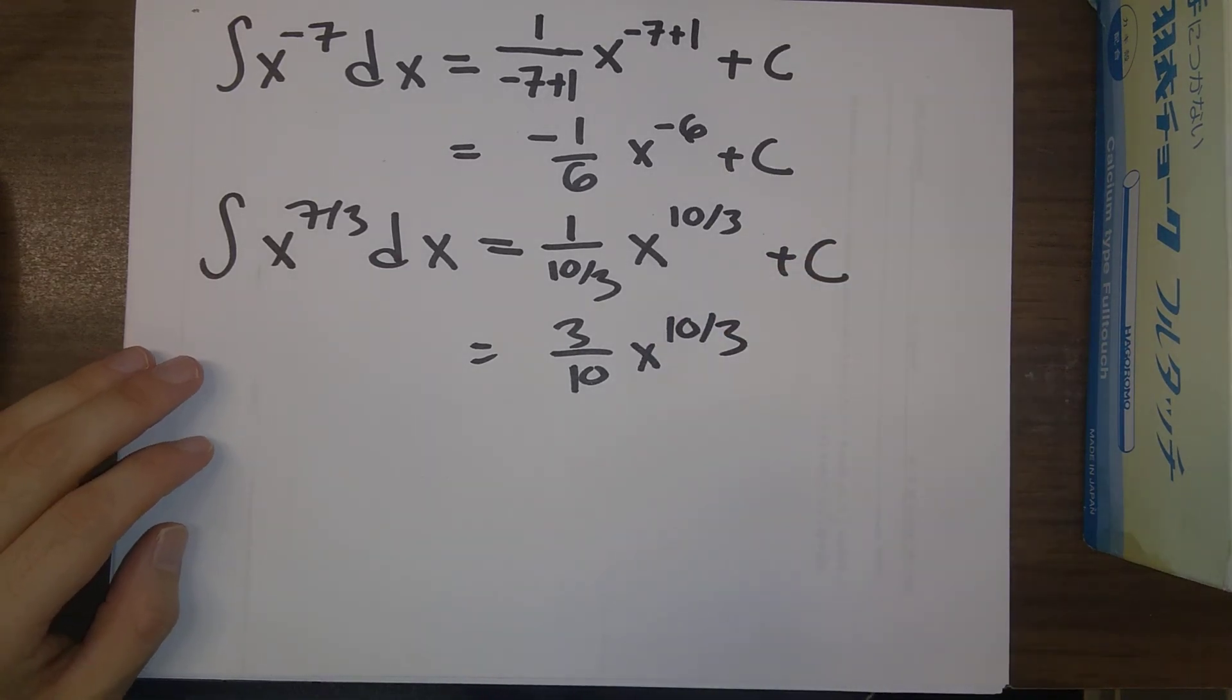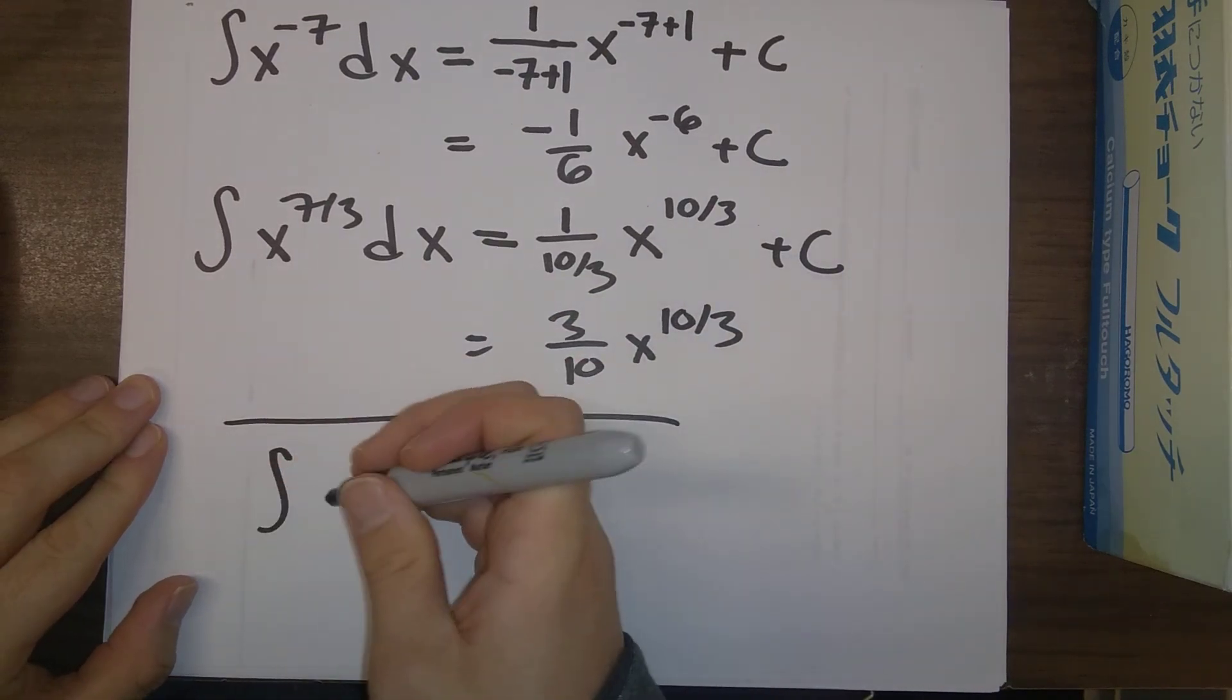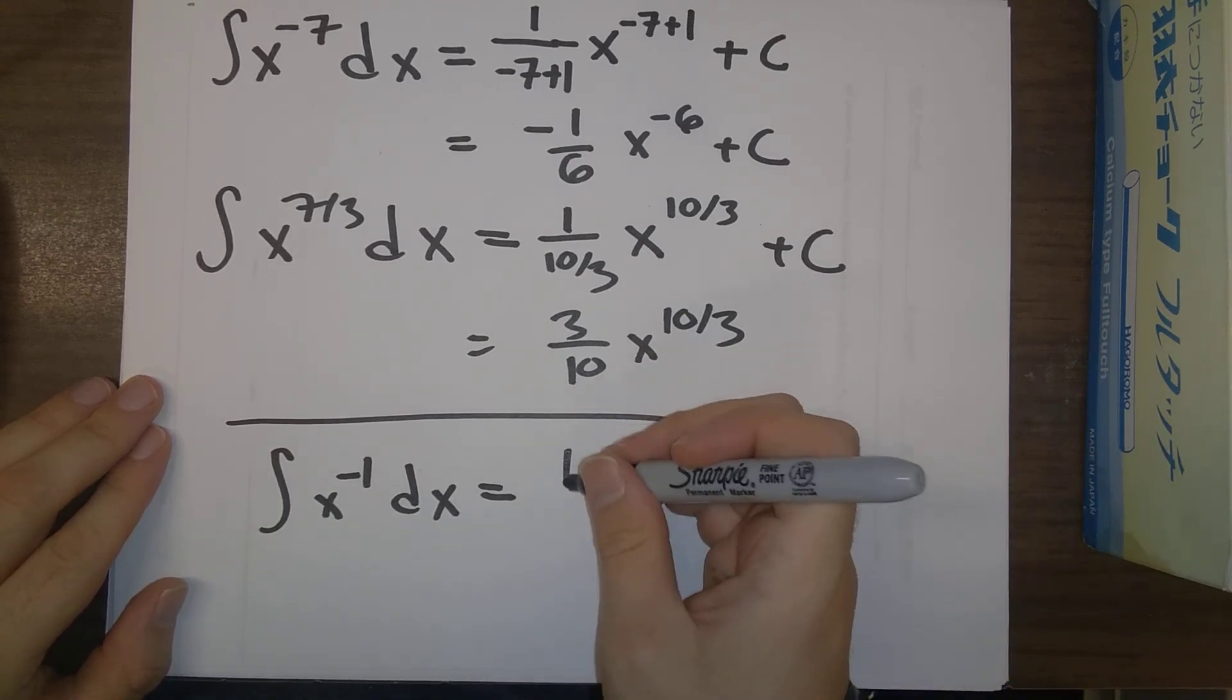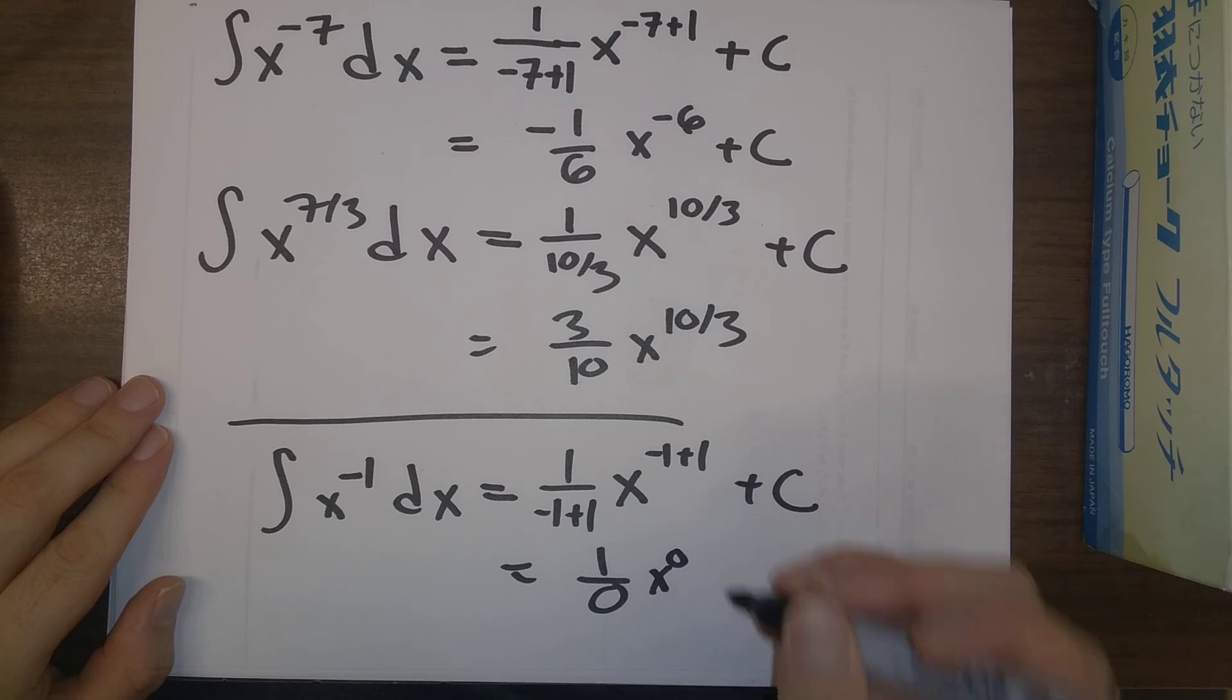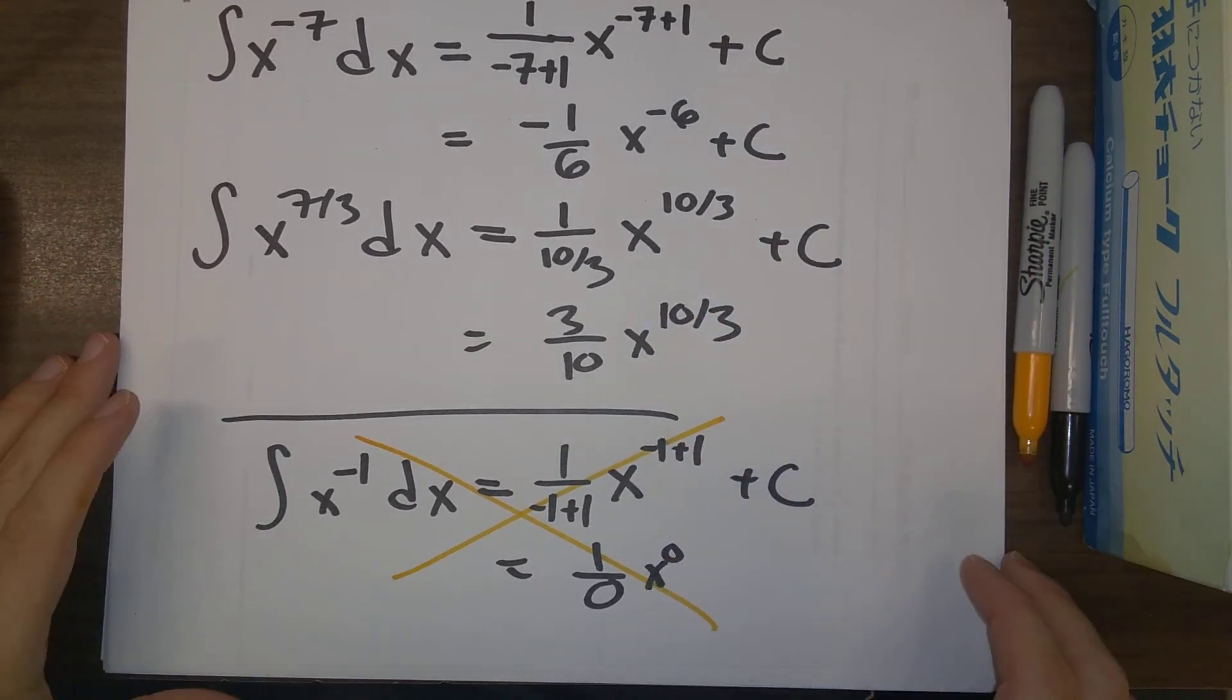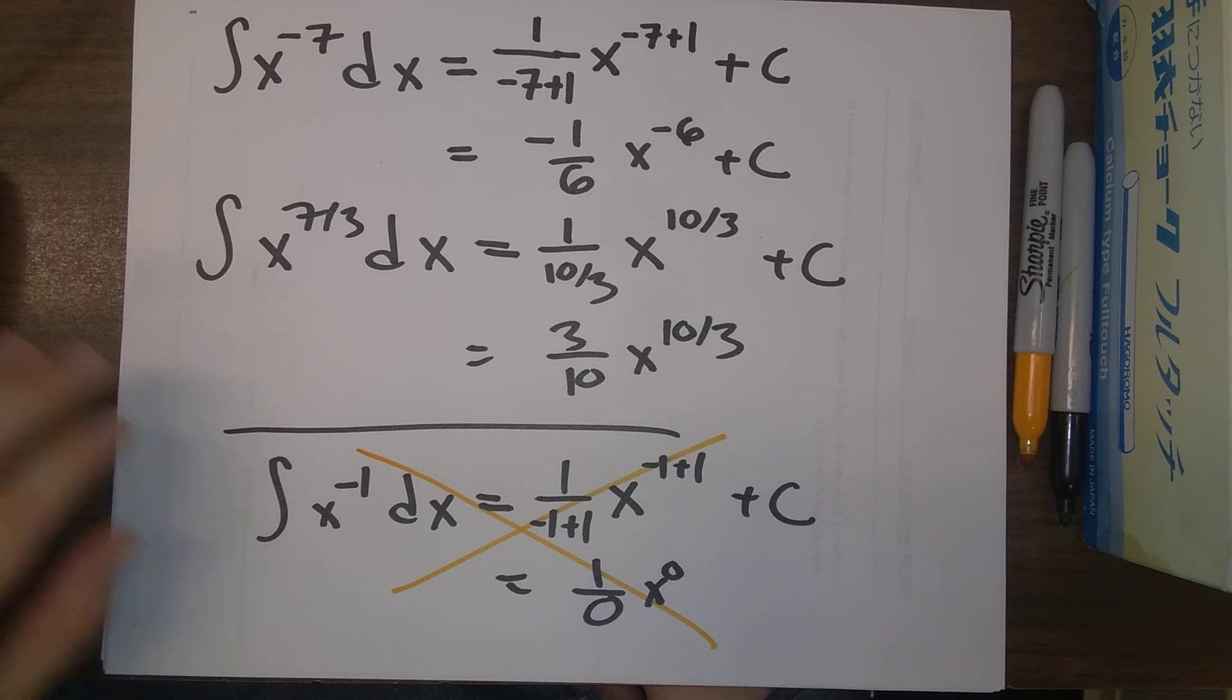So the only n that this does not work for is n is equal to minus 1. So let's see that. If we try to say what's x to the minus 1 dx, well, we go x to the minus 1 plus 1, divide by minus 1 plus 1 plus c. And now, uh-oh, we're dividing by 0, so this is not allowed. So in the future, we'll see exactly what is the answer when we, there is a nice formula for the indefinite integral of x to the minus 1, but it does not follow the power rule.